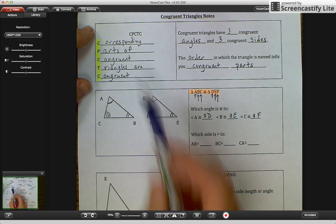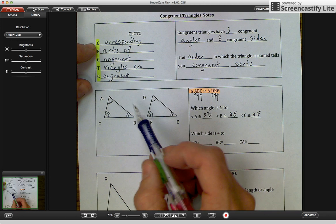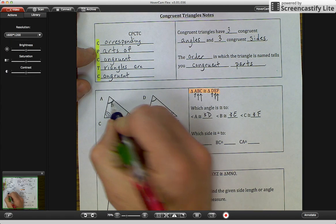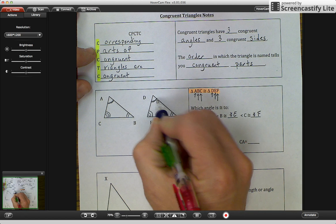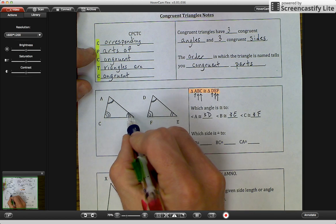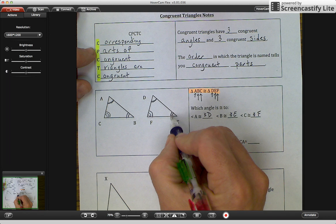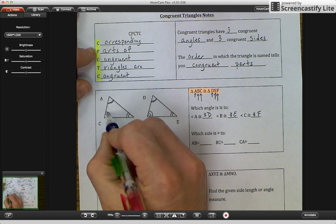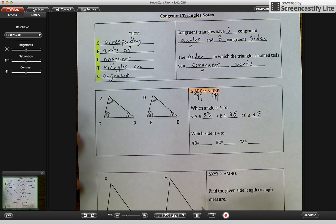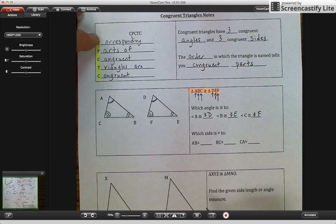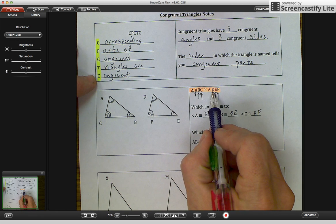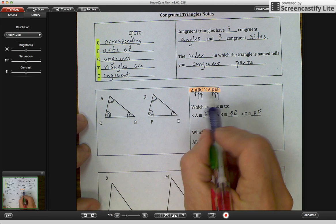If we go back to our CPCTC, the corresponding parts, corresponding angle A and angle D, angle B and angle E, angle F is corresponding to angle C. So those are all corresponding. So corresponding parts of congruent triangles are congruent. This statement tells us they're congruent. So each part is congruent.